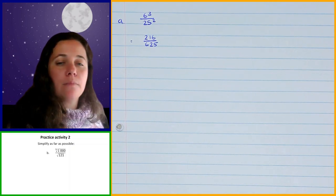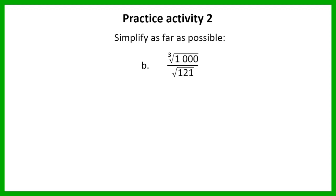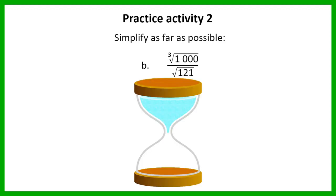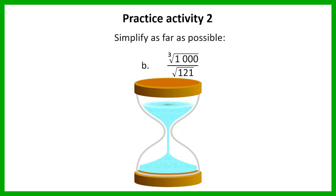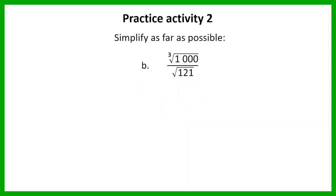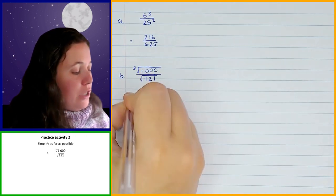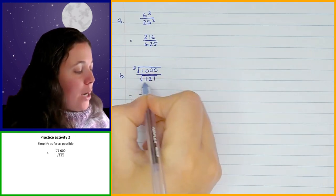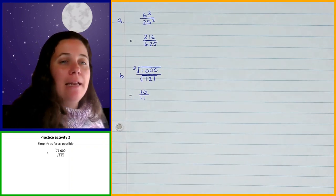Question B: we've got the cube root of 1000 over the square root of 121. The cube root of 1000 is 10, over the square root of 121, which is 11. So that gives you 10 over 11 for question B.